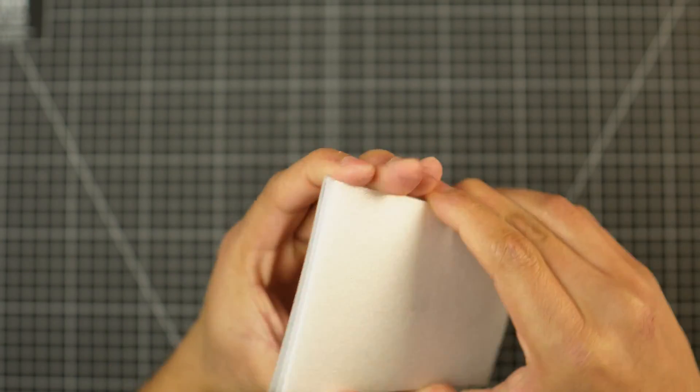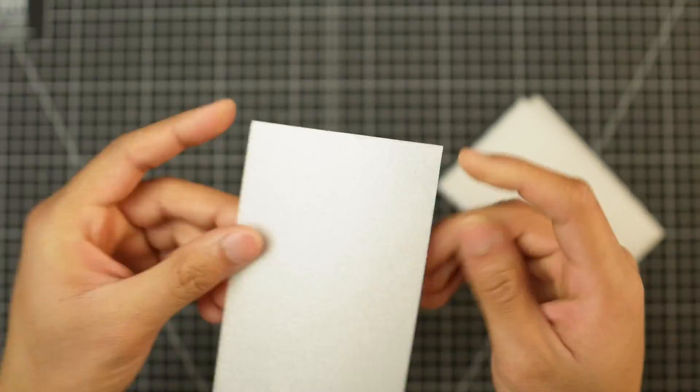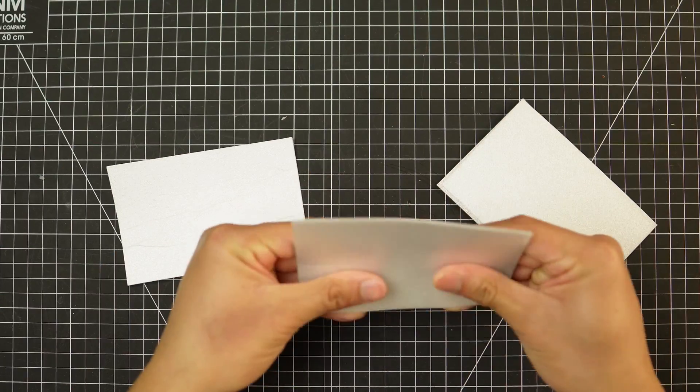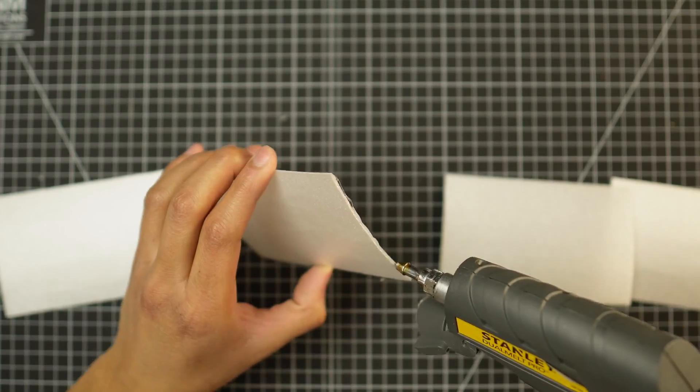We need to have a curvature and that's going to act as the airfoil shape for this model. This is a necessary step, so don't neglect it. It's going to help you catch the air a lot better and help you get some lift.